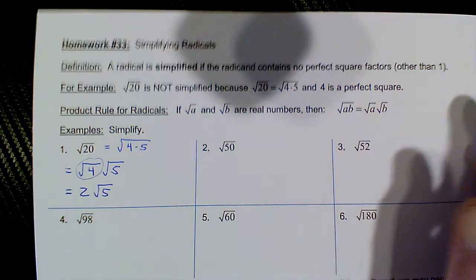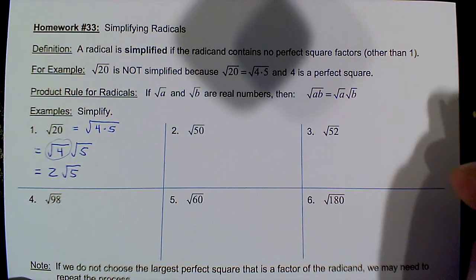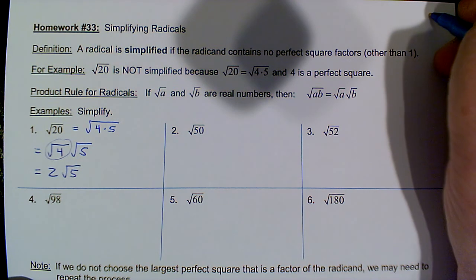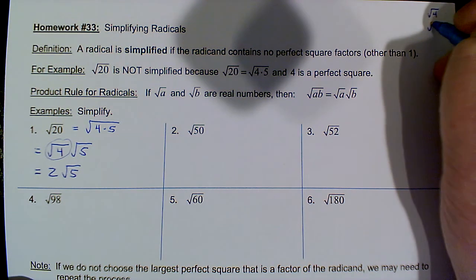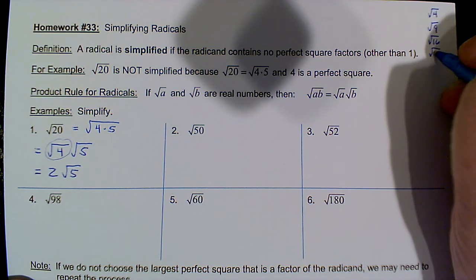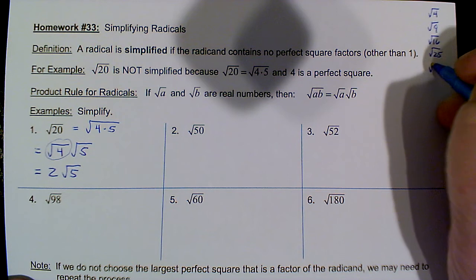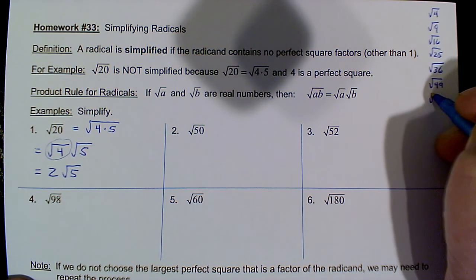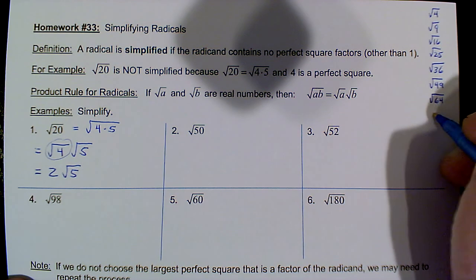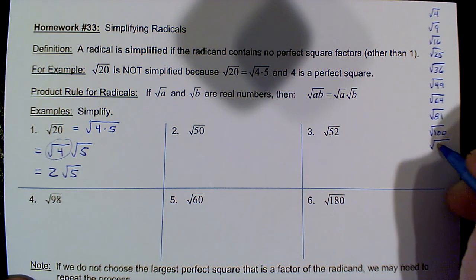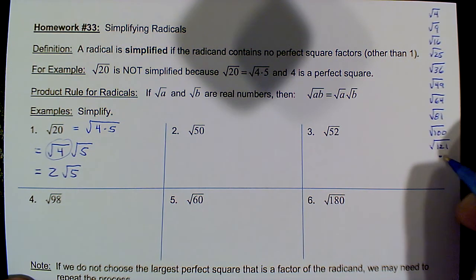You can write down the perfect squares as a reference list: square root of 4 is 2, square root of 9 is 3, square root of 16 is 4, square root of 25 is 5, square root of 36 is 6, square root of 49 is 7, square root of 64 is 8, square root of 81 is 9, square root of 100 is 10, square root of 121 is 11, and so on.